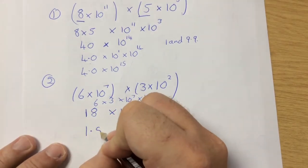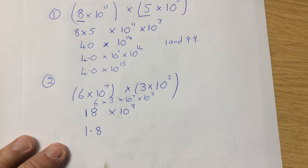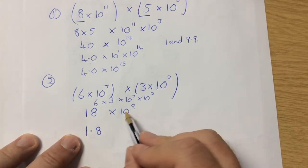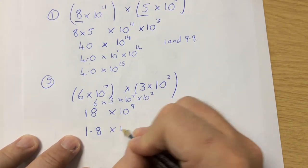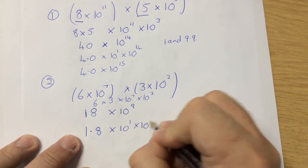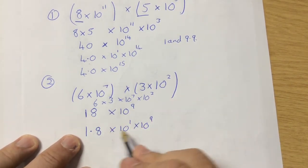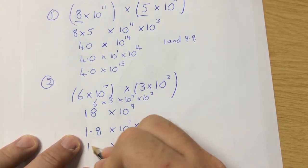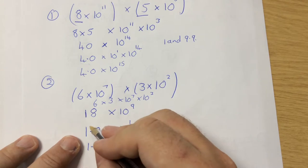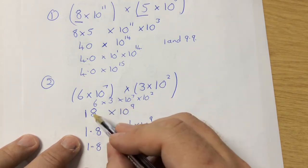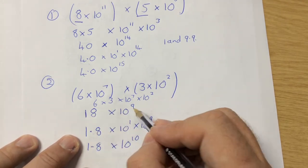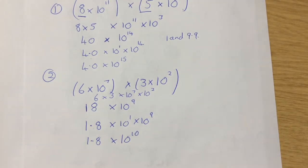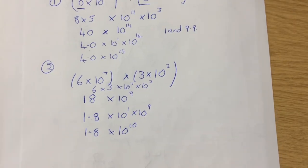So I need to put it as 1.8, because 1.8 times 10 is 18. So I've got to multiply that 10 to the 9 by 10, making it 10 to the 10. Some people remember it as: when you divide the coefficient by 10, you add the power on. So the answer is 1.8 times 10 to the 10.